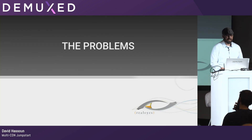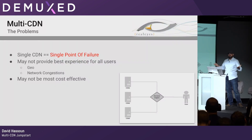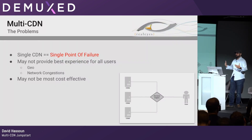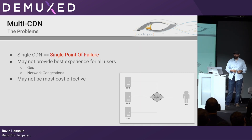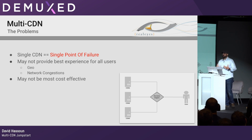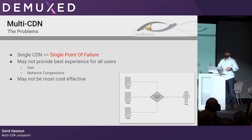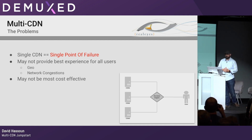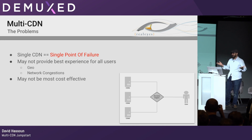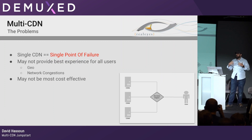The problem: a single CDN equals a single point of failure — at the very bare minimum, that's one thing you really have to consider and is a big driver behind this. But it's not just that. There are other factors: it may not provide the best user experience for all your users, there are geo elements, not all CDNs are equal across the globe, we're talking about potentially massive scale events, and not all of them cost the same.